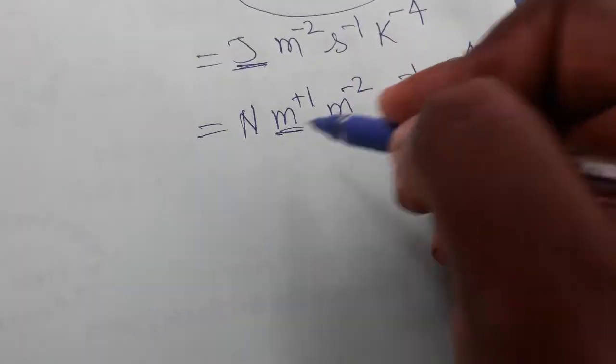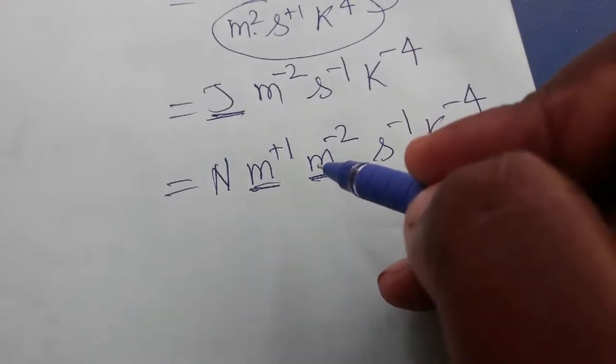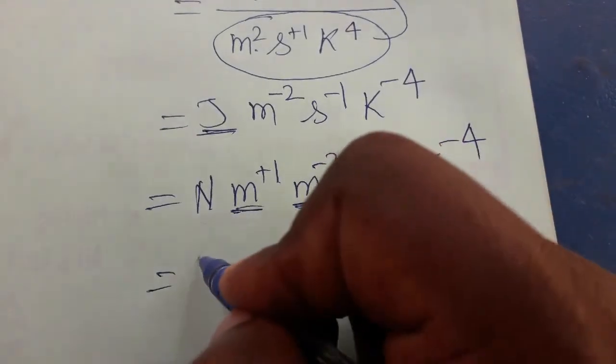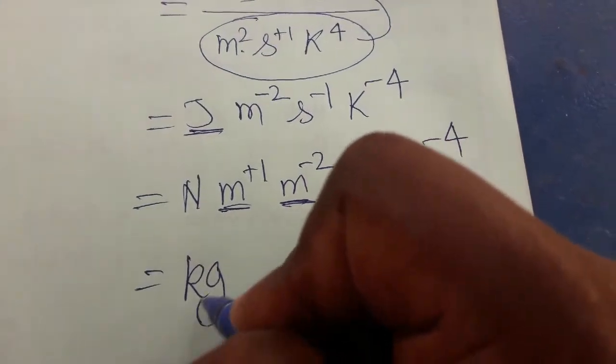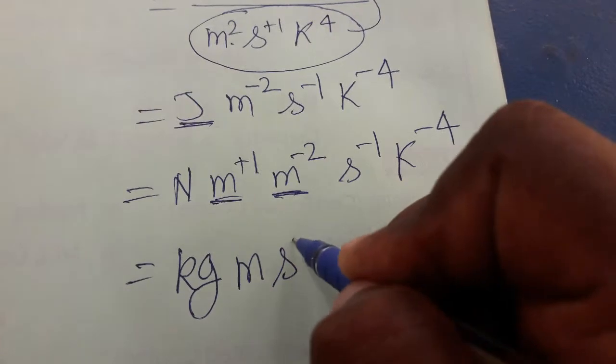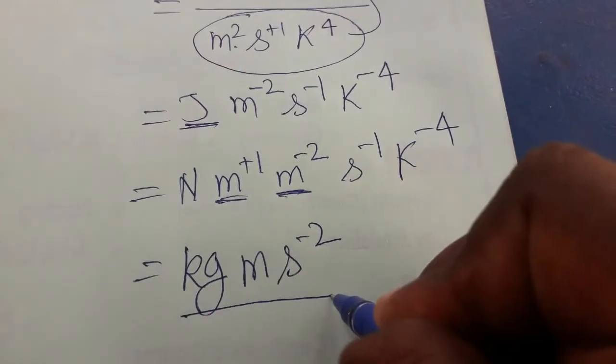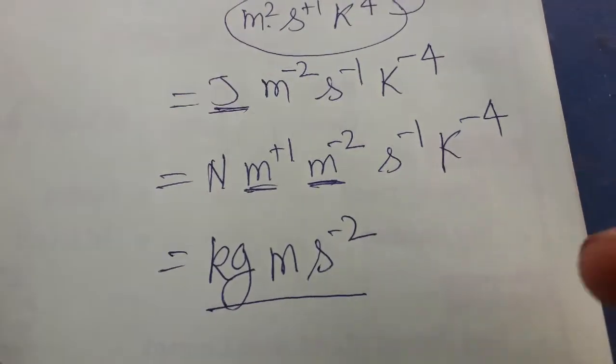Again this meter, this meter power you can add because both is in a meter. So Newton is a force into acceleration, kg meter second minus 2. Force SI unit will be a kg meter second minus 2.